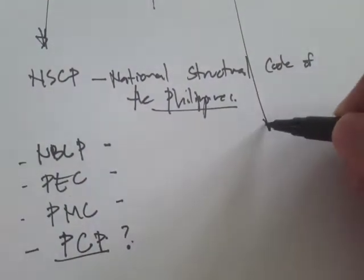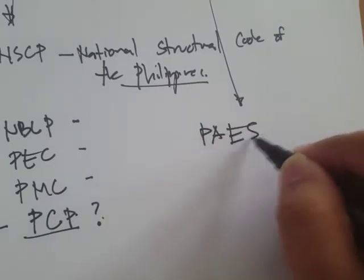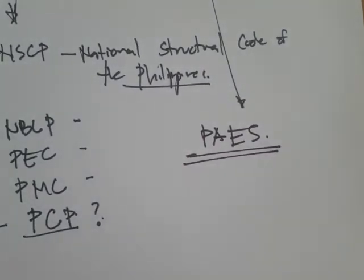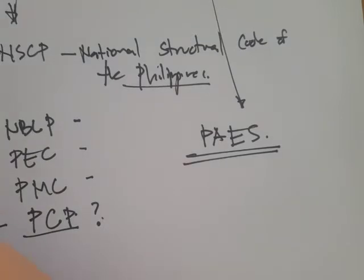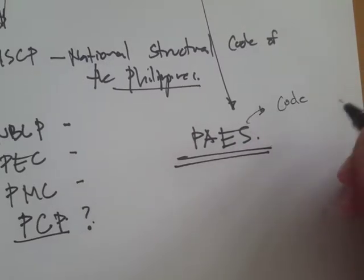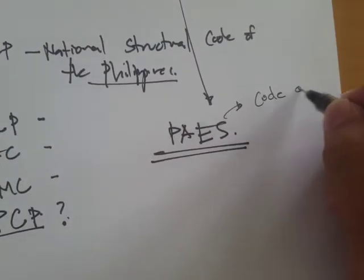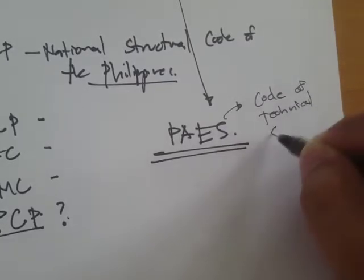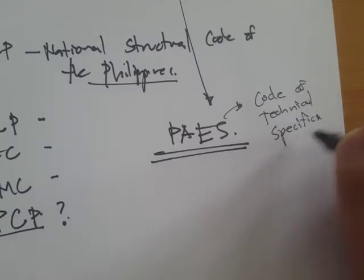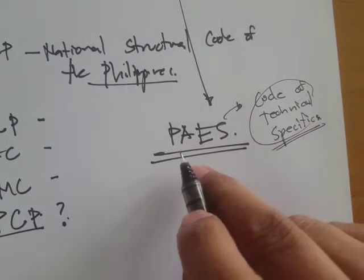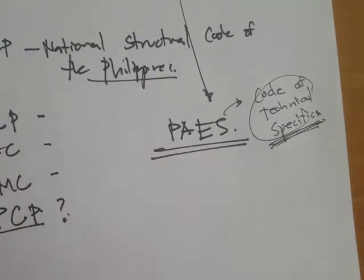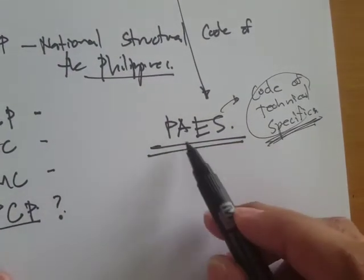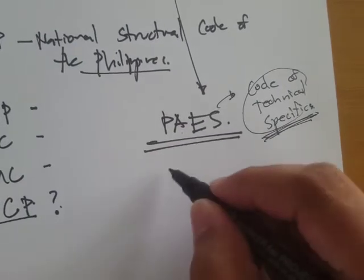For the standards, we'll be using the Philippine Agricultural Engineering Standards. Although it is termed 'standards,' there is actually RA 10915 that talks about the code — if I'm not mistaken, that's the code of technical specifications for agricultural and biosystems engineering. For now we'll just use it as it is — the Philippine Agricultural Engineering Standards.